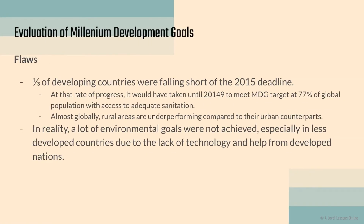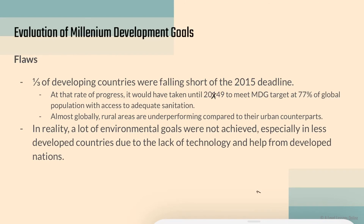However, there were flaws and drawbacks. One-third of developing countries were actually falling short of the 2015 deadline. At the rate of progress at that time, it was projected that by 2049, only 77% of the global population would have access to adequate sanitation. Most less developed countries didn't manage to improve sanitation levels — they were struggling due to a lack of technology and weaker governance.